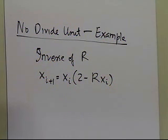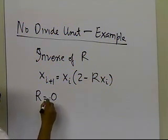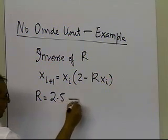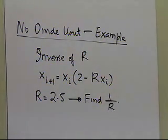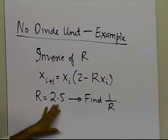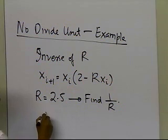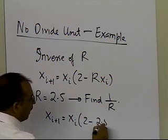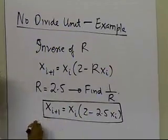So we'll go ahead and take an example. Let's suppose somebody gives you r equal to 2.5, and I'm going to ask you to find what 1 divided by r is without using the divided unit on your calculator or on your computer. So we can use this particular formula to be able to do that. I'll get x of i plus 1 is equal to x of i times 2 minus 2.5 times x of i. So that becomes my formula now to find the inverse of 2.5.